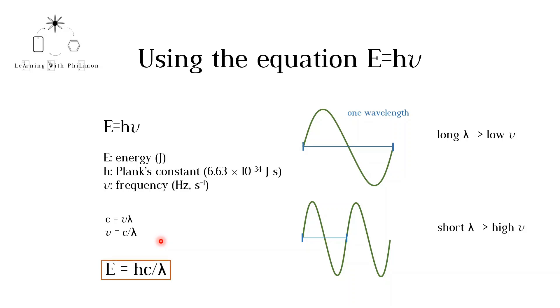Wavelength is also inversely proportional to the energy. The longer the wavelength, the lower the energy. The shorter the wavelength, the higher the energy of the light wave.